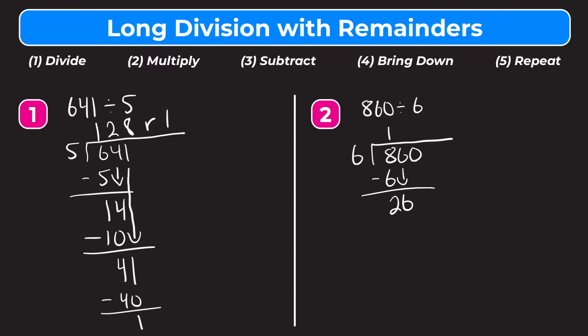Step 5 is repeat. How many whole groups of 6 fit into 26? That will be 4. Then multiply: 4 times 6 is 24. Step 3 is subtract: 26 minus 24 is 2. Step 4 is bring down — bring our 0 down. That becomes 20.